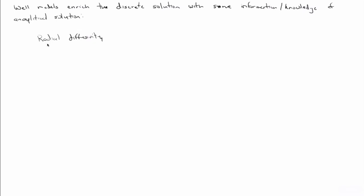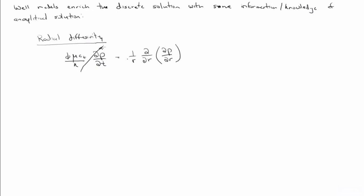Early in the class, we derived the pressure diffusivity equation in Cartesian coordinates. We could have done it also in radial coordinates, and assuming homogeneous isotropic properties like we did at the very beginning of the class, we would end up with the radial diffusivity equation, where r is the radial distance from some location. If we assume steady state — no accumulation, no time rate of change — and apply some boundary conditions...